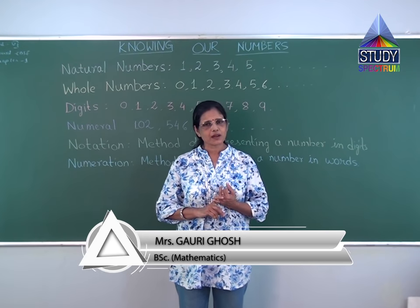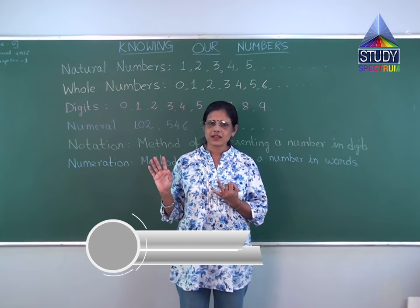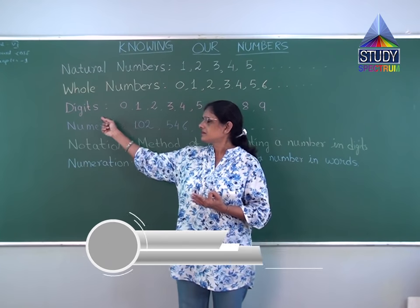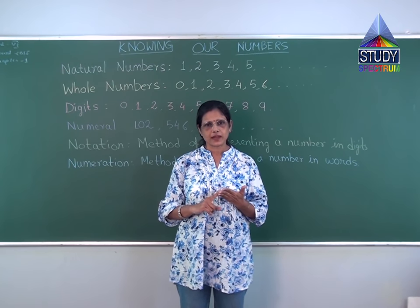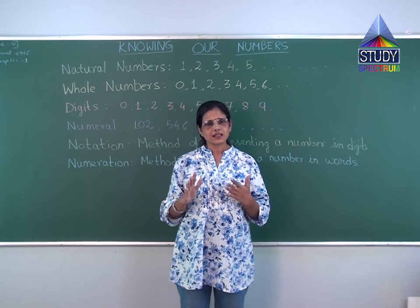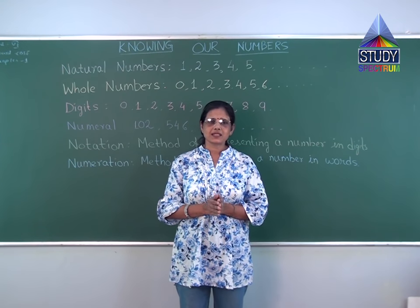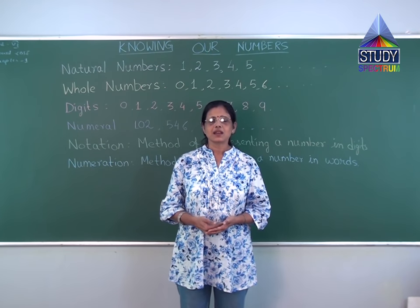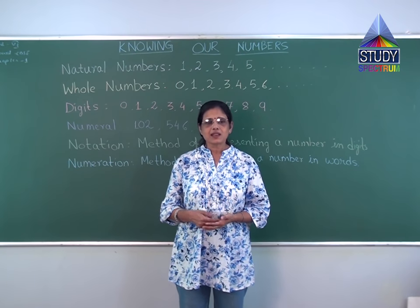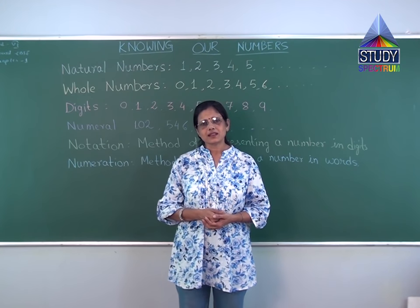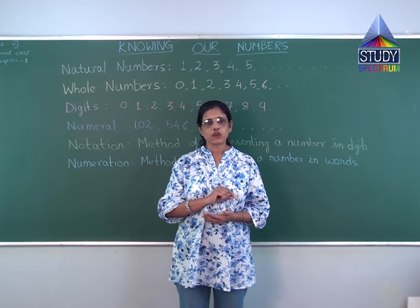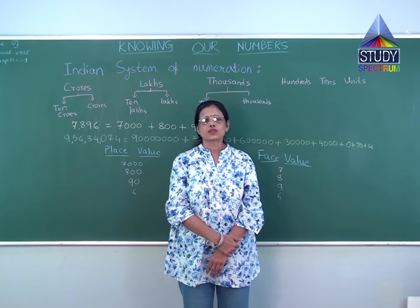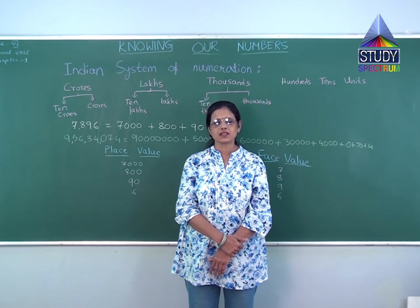To repeat: first comes natural numbers, starting from 1, 2, 3, 4 to infinite. Then whole numbers, starting from 0, 1, 2, 3, 4 to infinite. Then digits — only 10 values from 0 to 9. Combining digits to form different numbers gives us numerals or numbers, which can be 2 digits, 3 digits, 5 digits, 7 digits. Expressing numbers in digit form is notation; expressing numerals in words by spelling is numeration.